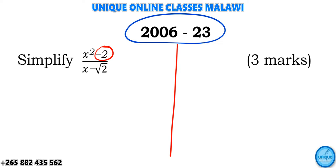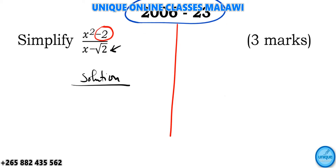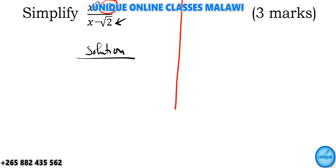So I will tell you — we need to rationalize this denominator. We rationalize by multiplying the numerator and denominator with the denominator, as usual.